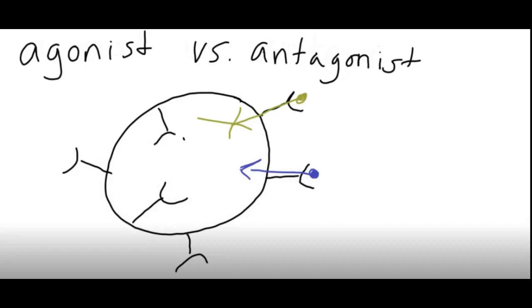In high school English, we talked about protagonists and antagonists in a story. The protagonist was the hero and the antagonist was the villain.